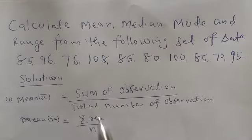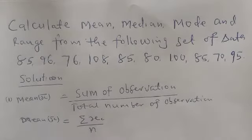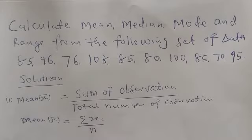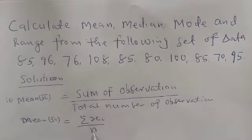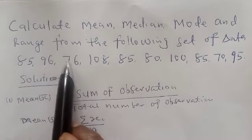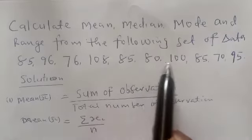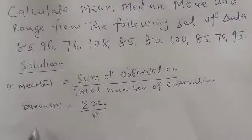The corresponding values of xi are 85, 96, 76 through to 95. From the question, we are asked to calculate the mean. The sum of observations are 85, 96, 76, 108, 85, 80, 100, 85, 70, and 95. The number of observations n: counting them gives us n is equal to 10.